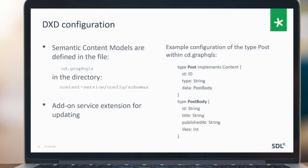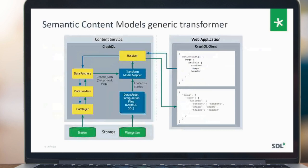In the cd.graphqls file you define your types — for example, a Post and PostBody — and also the mappings between fields coming from the Content Manager side. The system uses the GraphQL framework: it fetches data from the broker to a data layer and data loaders, and within the resolver it connects to the semantic content model definition and uses a transformer to map the corresponding fields. As a result, the response now contains properly structured content as specified in the data model configuration file.